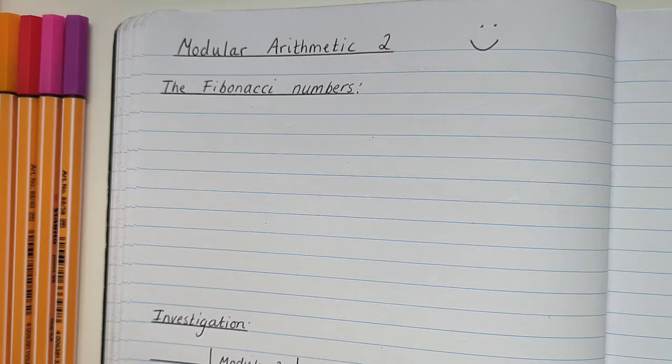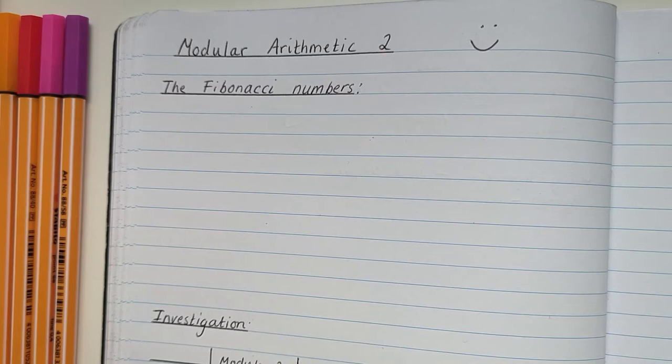Hello, this is the second lesson on modular arithmetic. Last lesson we looked at what modular arithmetic is and two different methods for using it. Today we're going to apply it to something called the Fibonacci numbers. The Fibonacci numbers make a sequence and they've got a special rule.